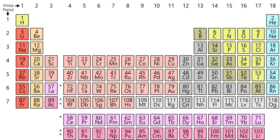The electron affinity of an atom is the amount of energy released when an electron is added to a neutral atom to form a negative ion. Generally, nonmetals have more positive electron affinity values than metals. Chlorine most strongly attracts an extra electron. The electron affinities of the noble gases have not been measured conclusively, so they may or may not have slightly negative values. Electron affinity generally increases across a period, caused by the filling of the valence shell of the atom. A group 17 atom releases more energy than a group 1 atom on gaining an electron because it obtains a filled valence shell and is therefore more stable.